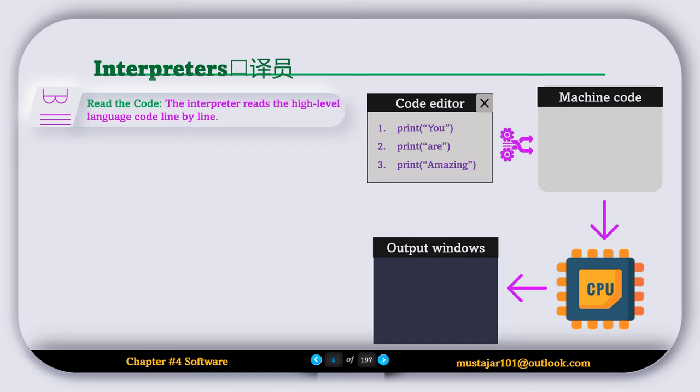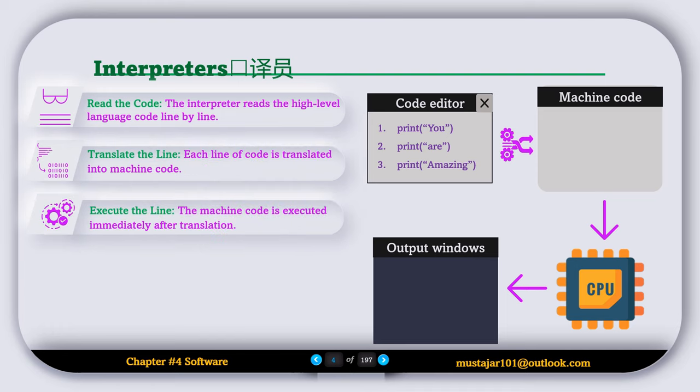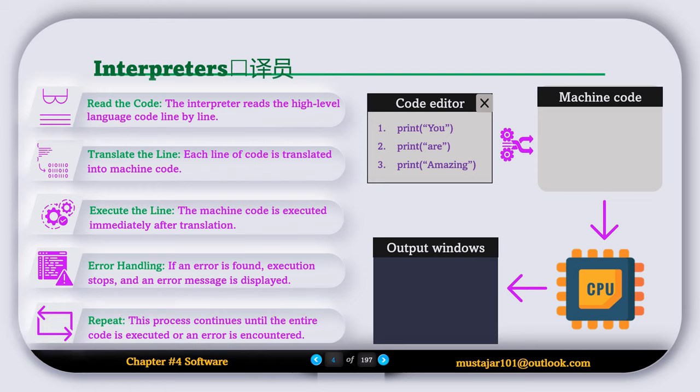We are going to see how interpreters translate high level language code into machine code. The interpreter reads the high level language code line by line. Each line of code is translated into machine code and executed immediately after translation. If an error is found, execution stops and an error message is displayed. The process continues until the entire code is executed or an error is encountered.